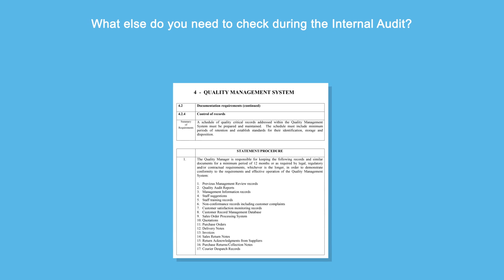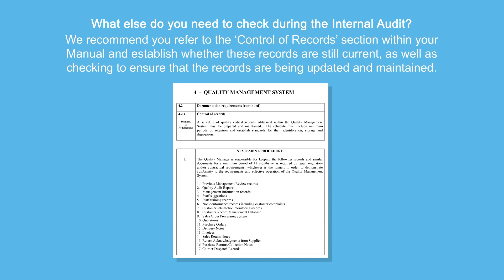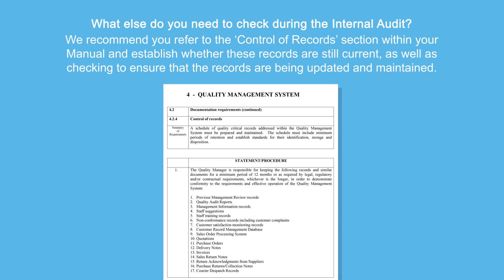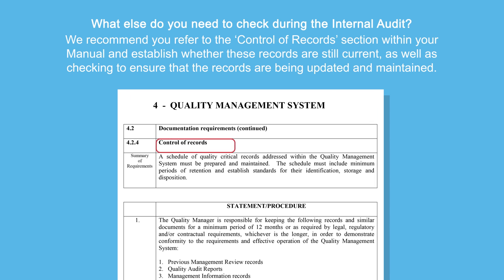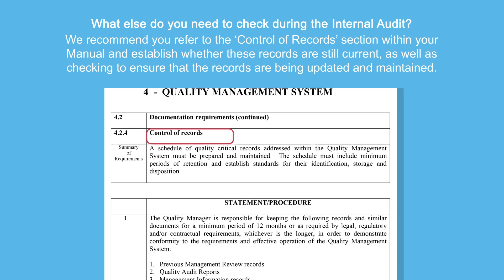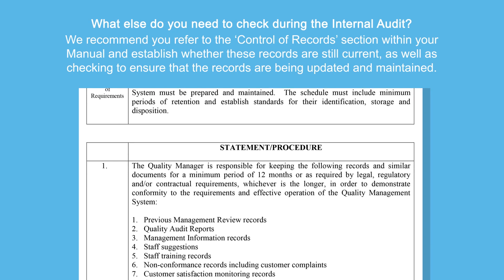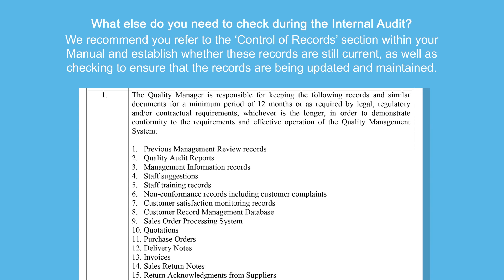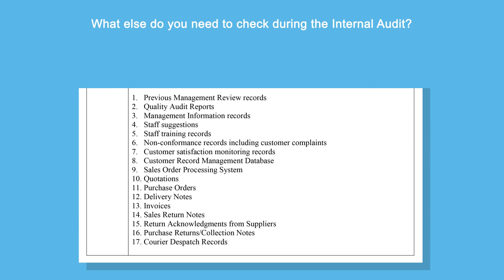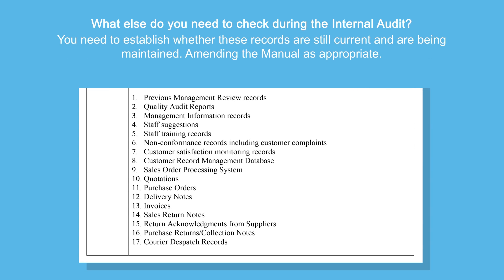What else must you check during your internal audit? Within the manual, there is a section titled 'Control of Records.' Here, you will see a list of all the records the QMS auditor will inspect at the external audit. From this list, you need to establish whether these records are still current and whether the records are being updated and maintained, amending the manual accordingly.